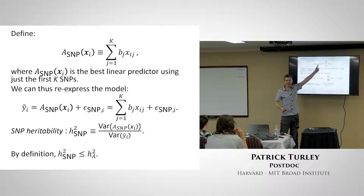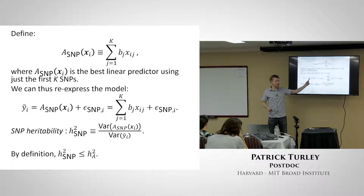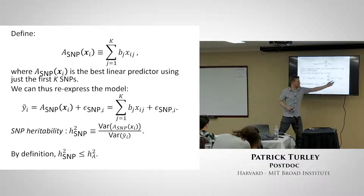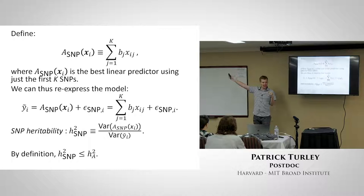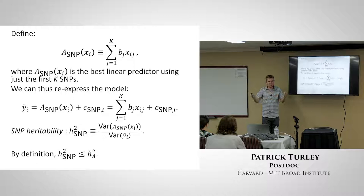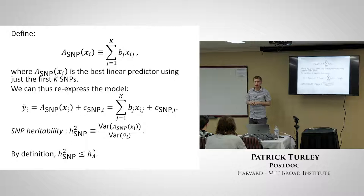Now we have this additive factor for SNPs, which is just the sum across our observed SNPs, with the residual left over from the subset. This gives us a new notion of heritability. We already talked about broad heritability — all genetic factors, every combination and interaction. Narrow heritability is the linear effects of all variants. And now we have SNP heritability: the amount of variation explained by the SNPs in our model.